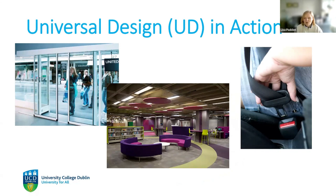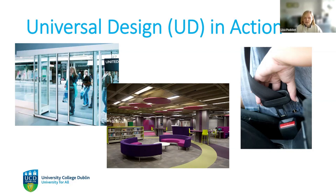Every time you go to Tesco's or Dunnes, you go in through an automatic door. It opens as you approach it and absolutely everybody can use the same entrance. We're not having to allow some people in one door and others in another direction. It's not stepped access, it's level access. You don't have to push a button or turn a handle to get in — it's for absolutely everybody.